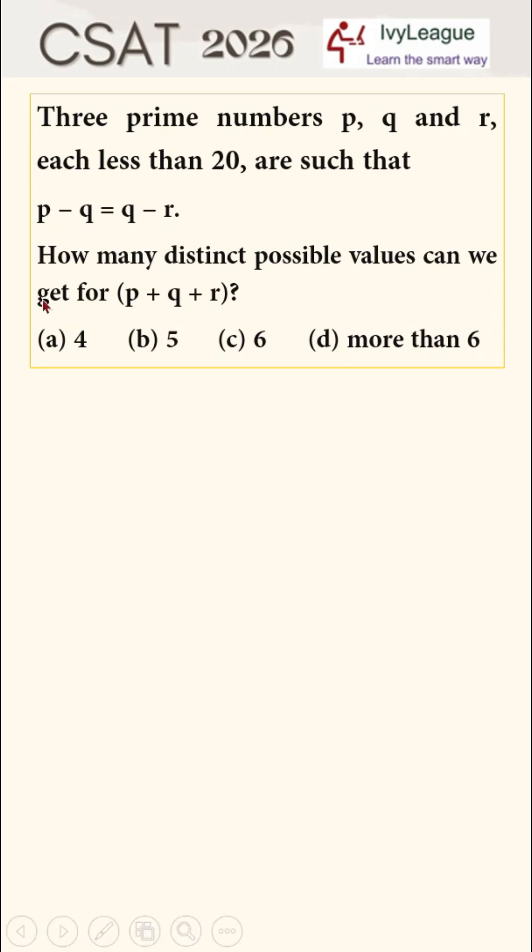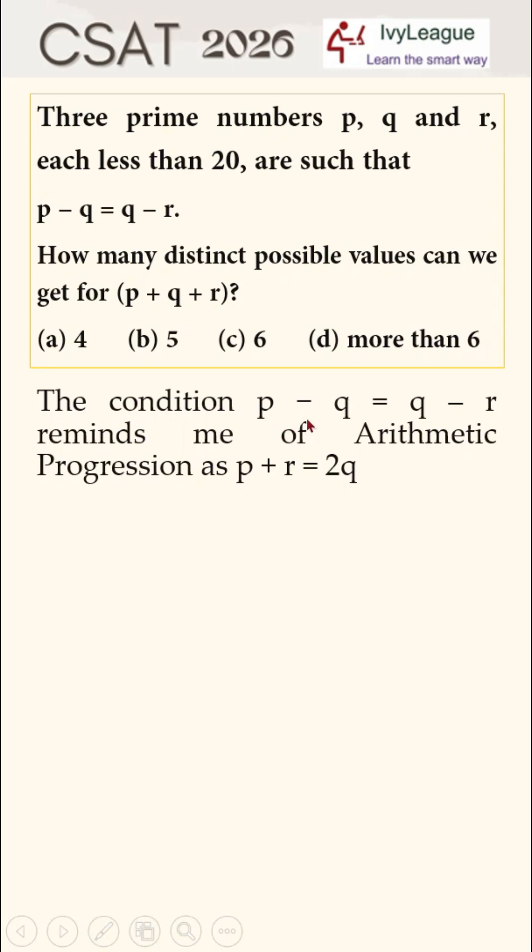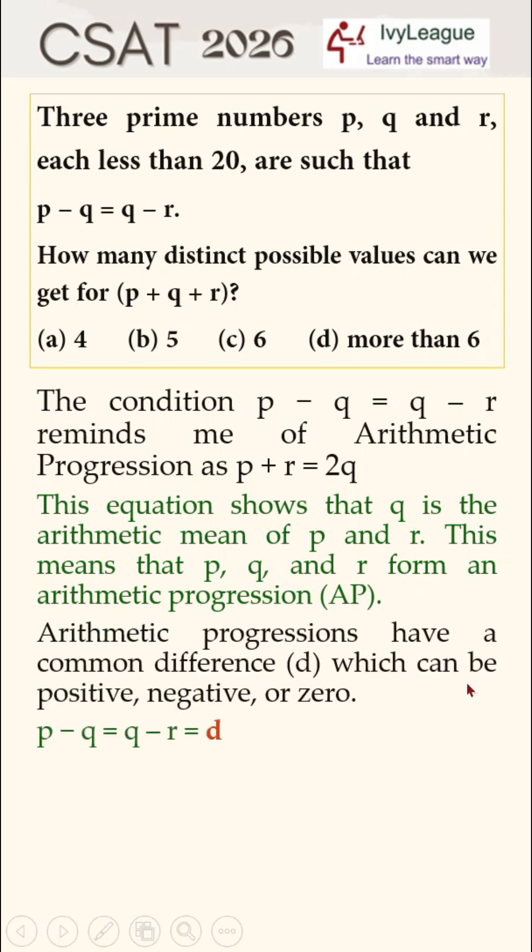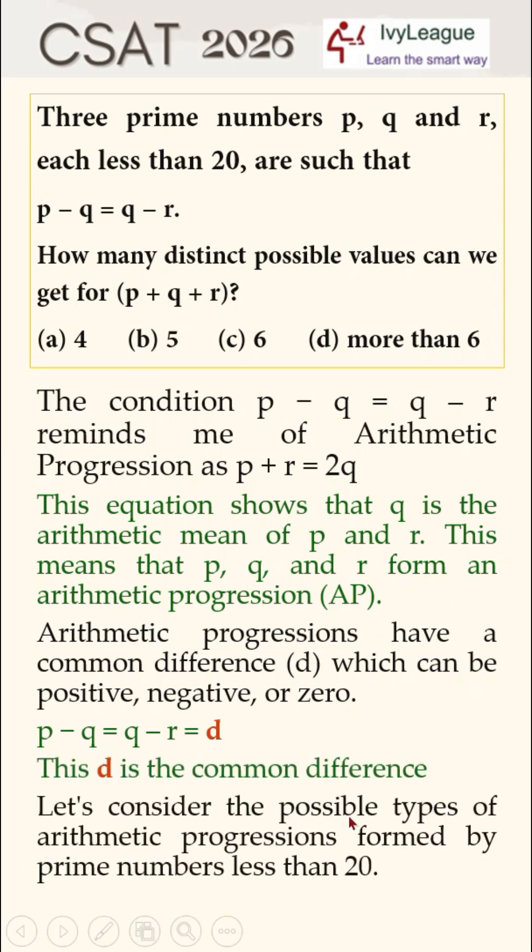This question is actually not a question of number systems. This condition p minus q is equal to q minus r reminds me of arithmetic progression, as p plus r is equal to 2q. This equation shows that q is the arithmetic mean of p and r. This means that p, q, and r form an arithmetic progression. p minus q is equal to q minus r, which is equal to d, the difference.